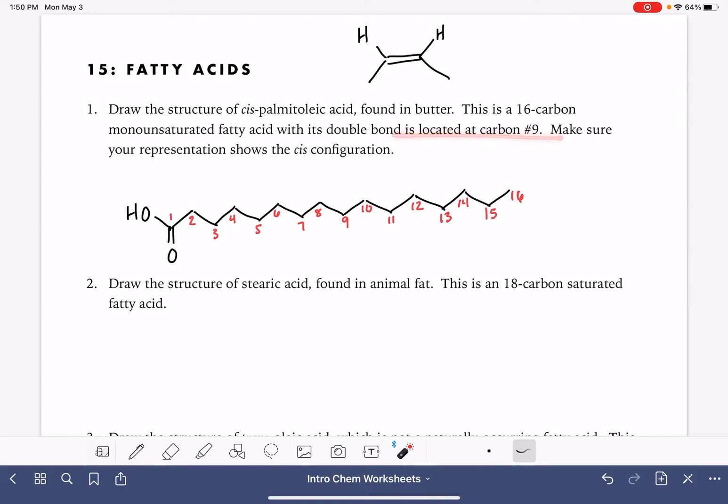The double bond is located at carbon number nine, which is right here. Double bonds go from the low number to the high number, so if the double bond is located at nine, that means it's in between nine and ten.